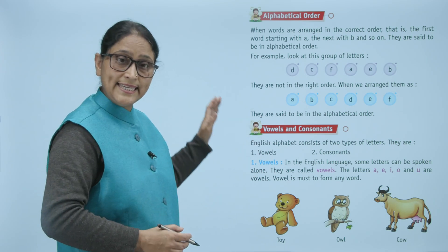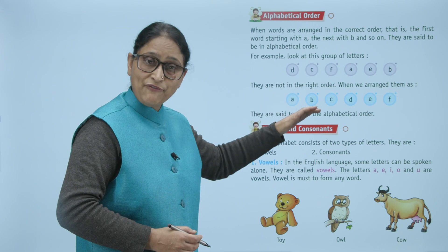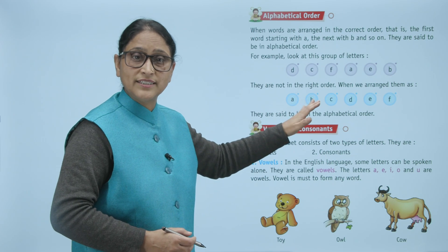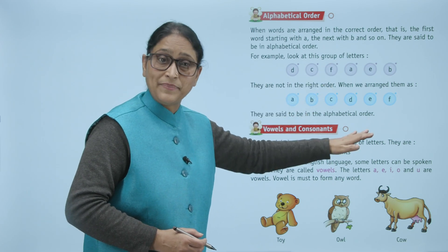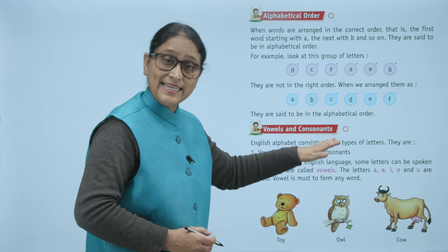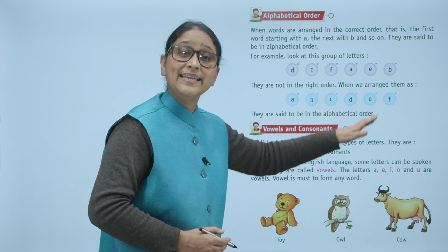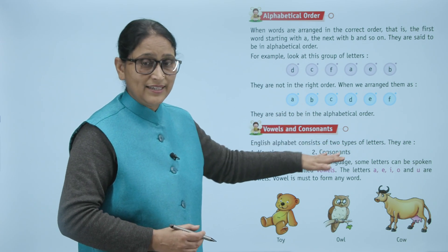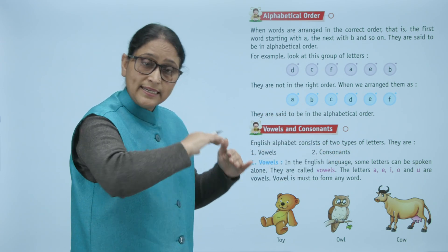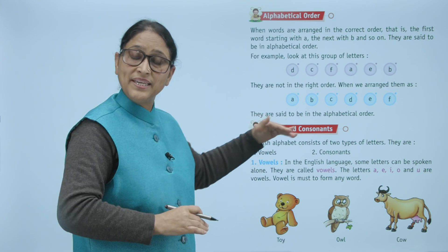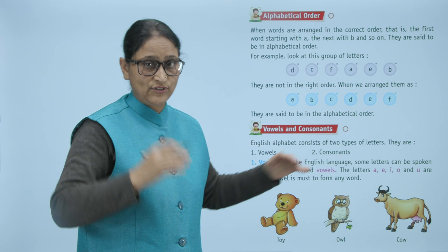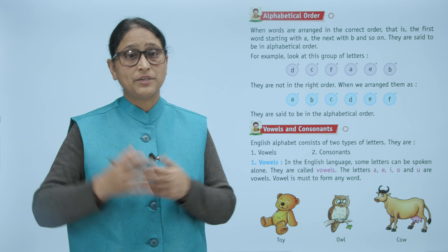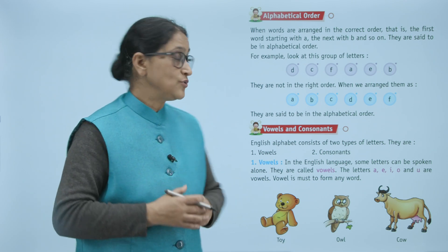They are not in the right order. When we arrange them as A, B, C, D, E, F, they are said to be in the alphabetical order. When we use them in increasing order like A, B, C, D, E, F, G, H, I, and so on, that is alphabetical order.